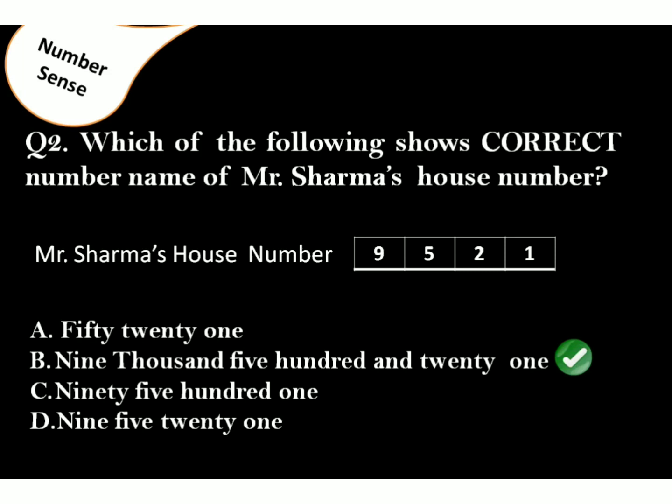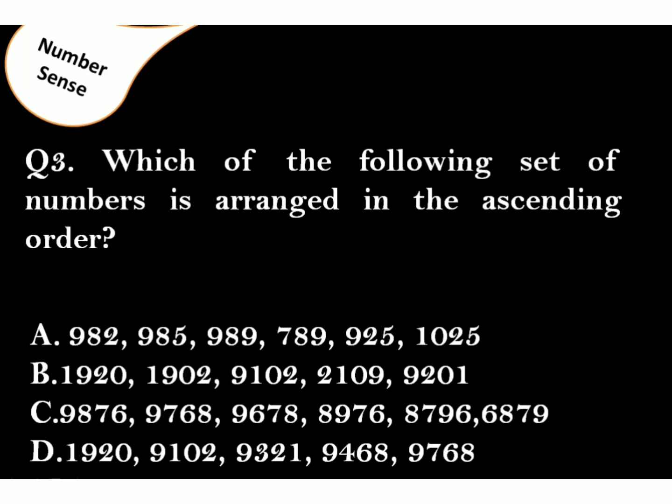Question 3. Which of the following set of numbers is arranged in the ascending order? Correct answer is Option D. In the ascending order, smaller one comes first. Option A and B have numbers in random order. And Option C has numbers in descending order. Hence, Option D is the correct answer.